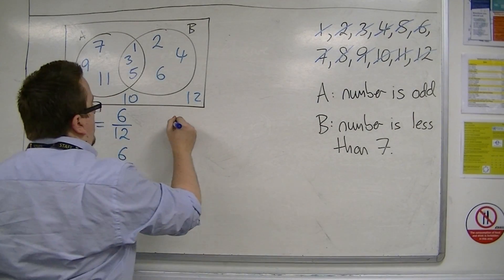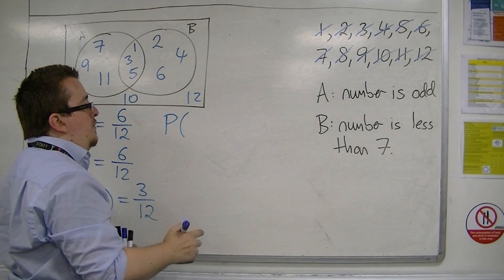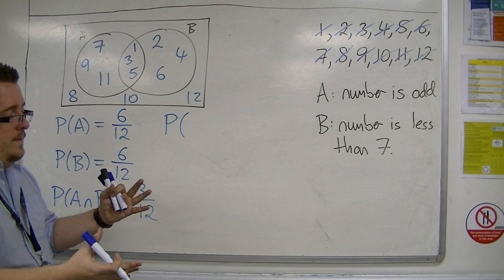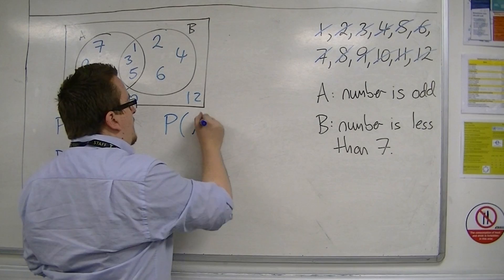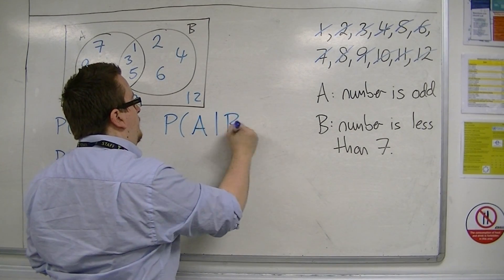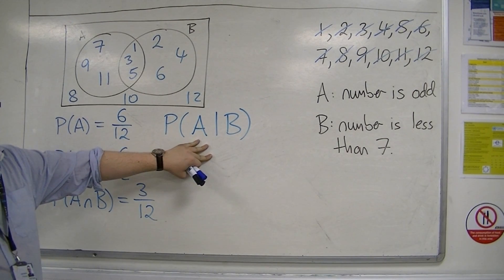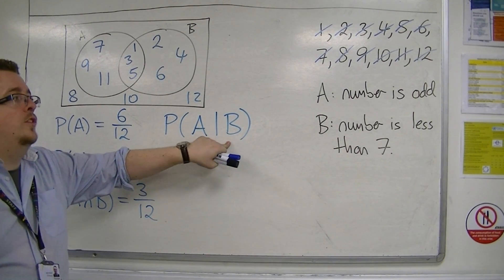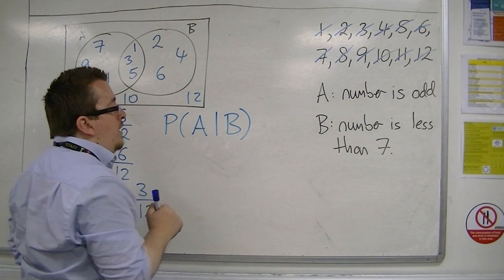Let's now think about this. This is where the conditional probability is coming in. Conditional probability is based around knowing something before, so knowing something already, and how that changes the probability. So it's written like this. What this means is the probability, what is the probability of selecting a number that is odd, given that I already know that the number is less than 7. So this means given that I already know B.